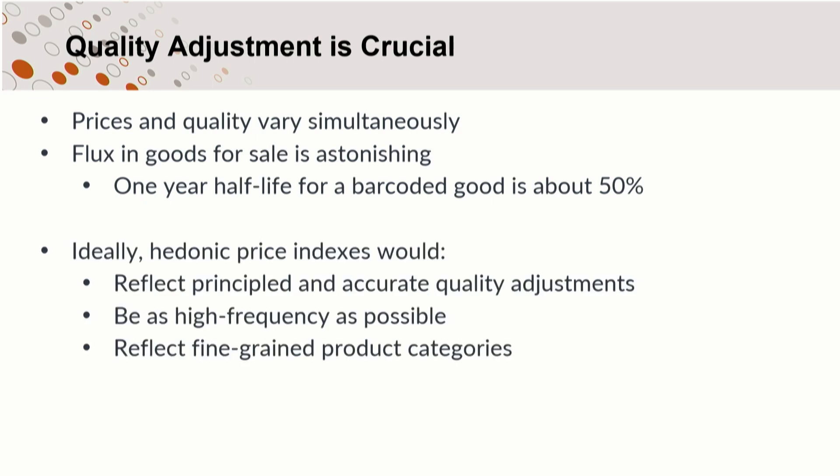So if we want any kind of valuable hedonic price index — some way to measure our ability to consume things over time — we want it to reflect accurate quality adjustments, something that reflects how much people prefer one change versus another, also to be high-frequency, and also to reflect really fine-grained product categories. So we don't want to just talk about clothing; we'd like to talk about white shirts, for example.